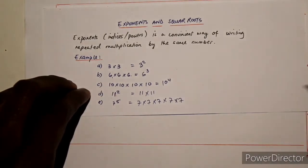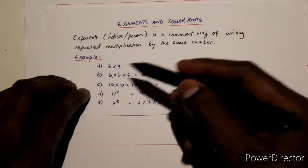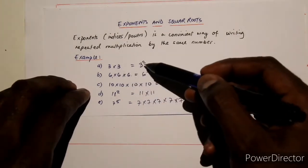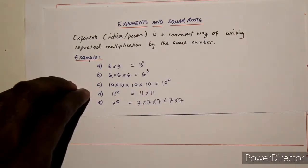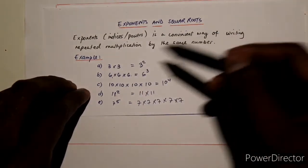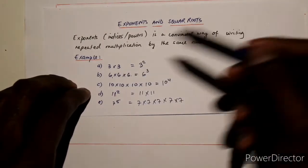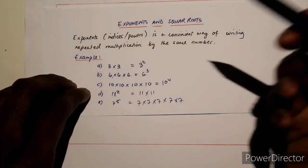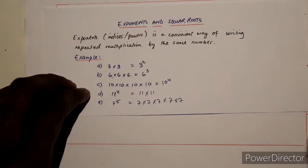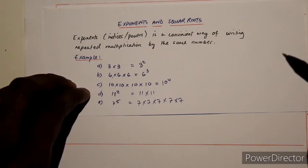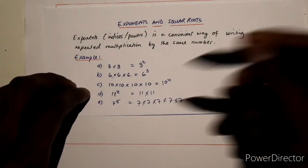So if you want to find the real answer for these powers, if 3 to the power of 2 is equivalent to 3 times 3, then the answer is 9. If 6 raised to the power of 3, then 6 times 6 is 36, times 6 again gives 216.